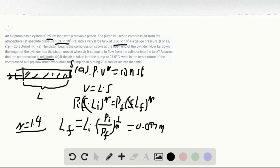And because we want to find out how far down the length has to move, so delta L equal to LI minus LF, which is equal to 0.153 meters.